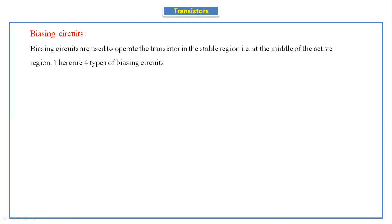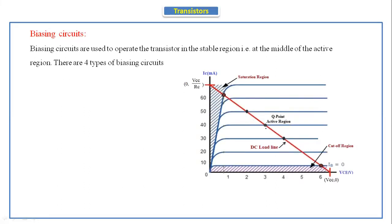Biasing circuits are used to operate the transistor in the stable region, that is at the middle of the active region. We always have to operate the transistor at the middle of the active region. This is the DC load line — for the output characteristics we take two points, and if we draw a line between these two points we get the DC load line. We already discussed the use of the DC load line and what is the operating point.